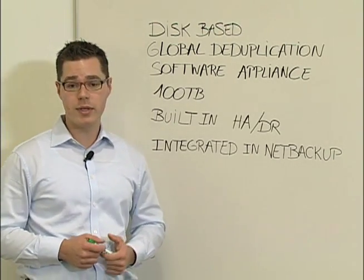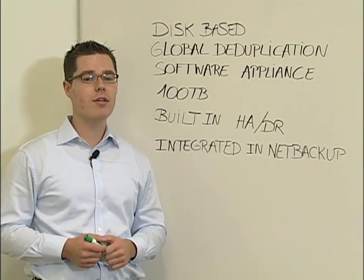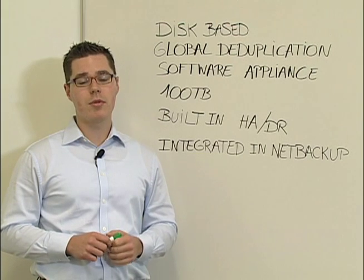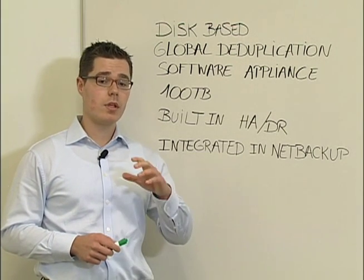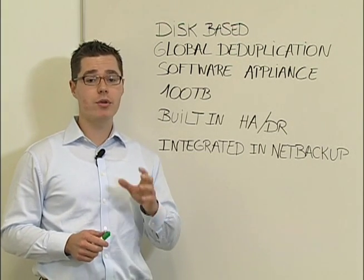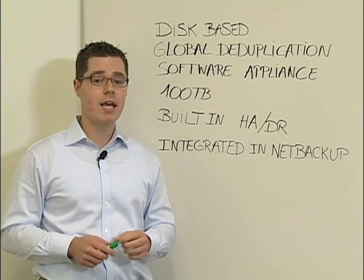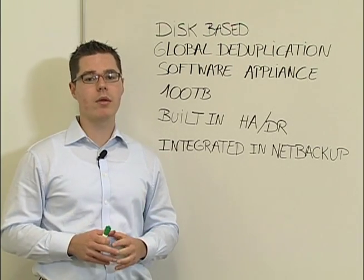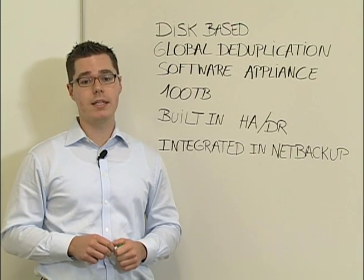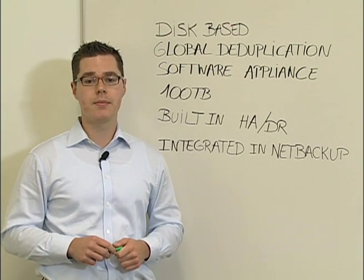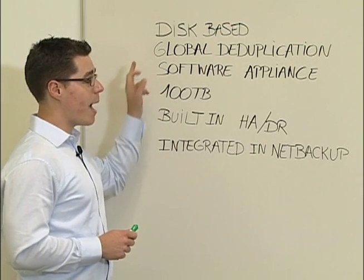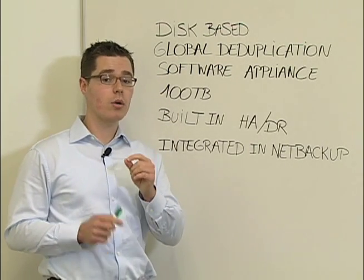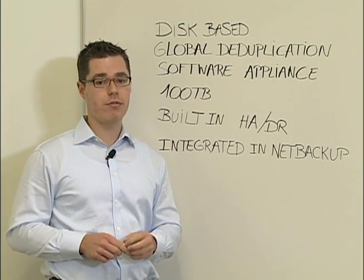The second bullet point is global deduplication. There are a lot of global deduplication terms flying around in the market. For Symantec, that means we will identify every unique file and unique segment in your whole environment, centralize that, and only store one single copy in a data center or remote site. So global deduplication happens on a file and on a block or segment level within a file — very granular.